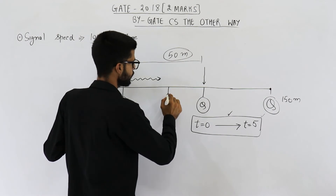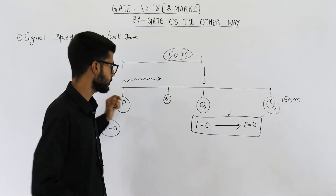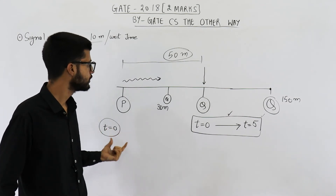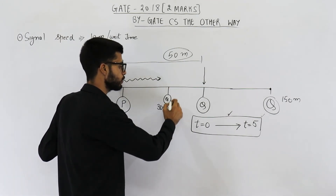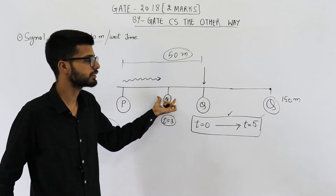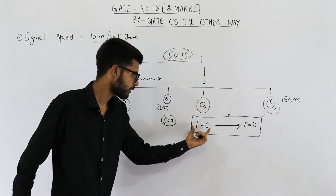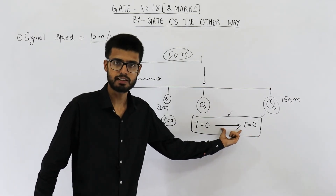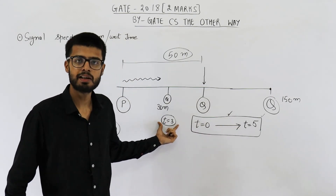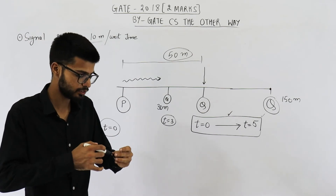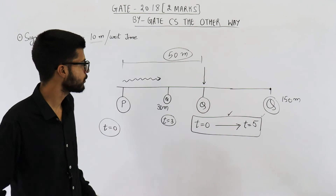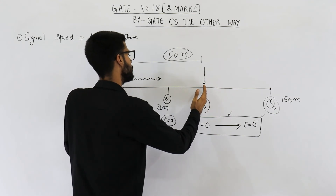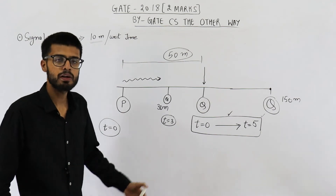If Q is placed at 30 meters from P, P starts sending at T=0 and at T=3 the packet reaches Q's location. Q is sensing the channel from T=0 to T=5, and after only three time units it will see that the channel is busy — someone is already transmitting — so Q will not transmit. Collision is not possible for any distance from zero up to a maximum of 50 meters.